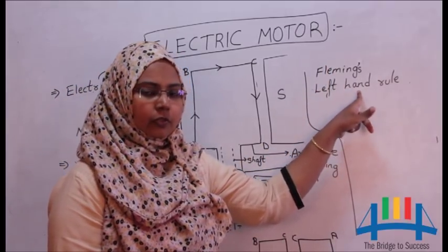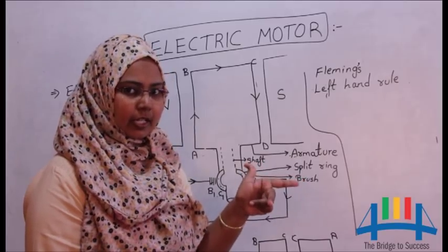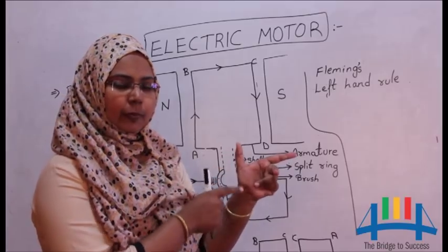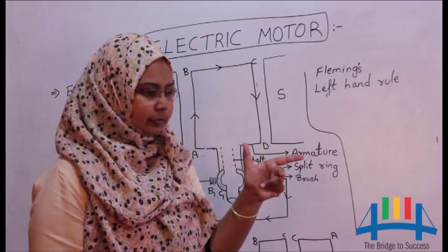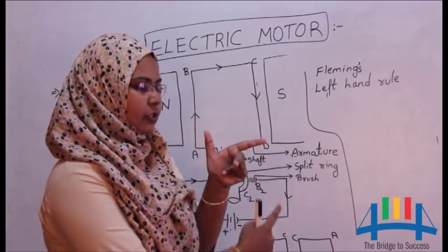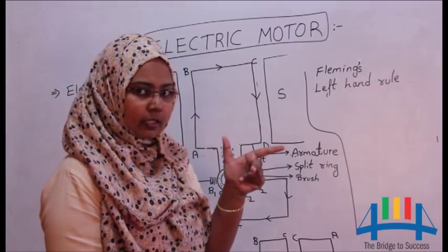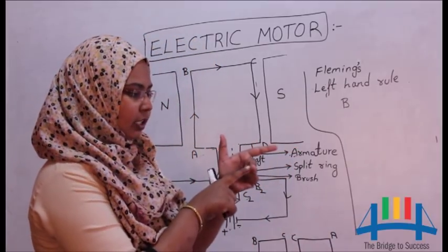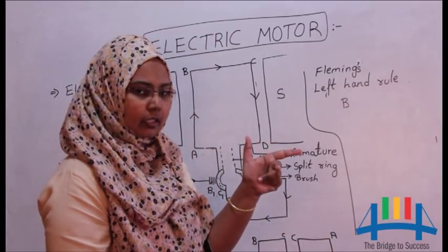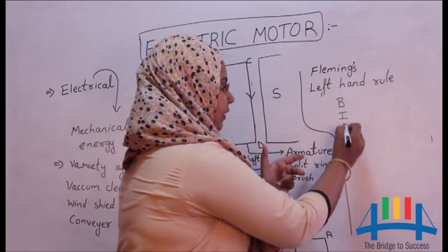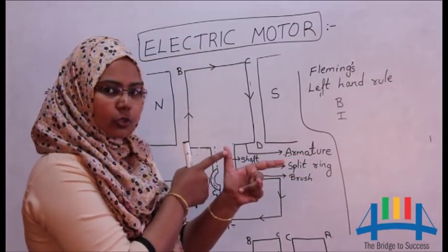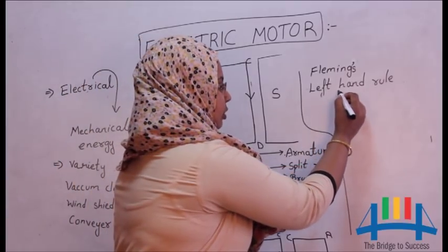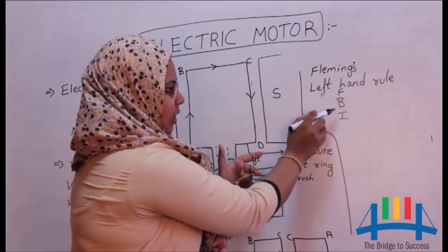According to this rule, you have to stretch your left hand in such a way that the forefinger, middle finger and the thumb all should be perpendicular to each other. The forefinger gives you the direction of magnetic field, denoted with the letter B. The middle finger gives you the direction of current, denoted with the letter I. And thumb gives you the direction of magnetic force, that is F. So in short, you can remember as FBI.